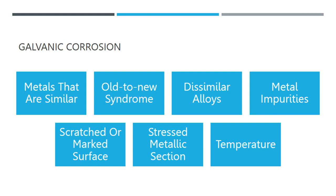When metal is put under stress, it becomes anodic to metal that is not. Common examples include bolts, bends, structural or mechanical stresses, and soil movement. In this case, the stress causes the metal to shear or crack before corrosion has reached the entire thickness of the structure. Lastly, regarding temperature: metal that is heated becomes anodic to the same metal when cooled. A metal becomes anodic to the rest of the metal because increased temperature makes it more active, and this electrochemical corrosion cell might accelerate on metals that are heated up.